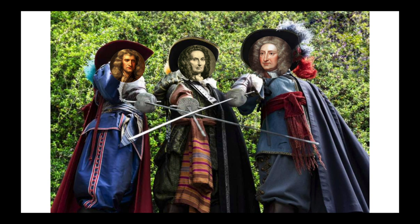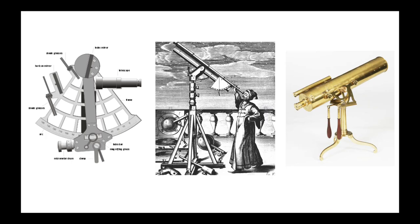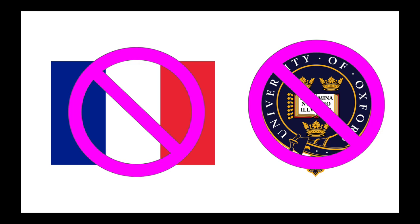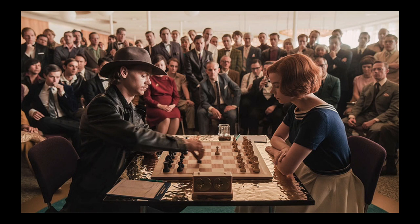Edmund Halley was a rich kid who sailed around the world, measured the solar system, and basically had his bum in the butter. Abraham de Moivre was a little bit different — he got kicked out of France for being a Protestant and wasn't allowed to teach at English universities because he was French. He was basically poor and alone.